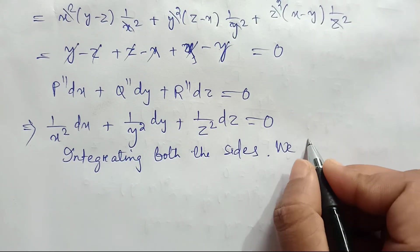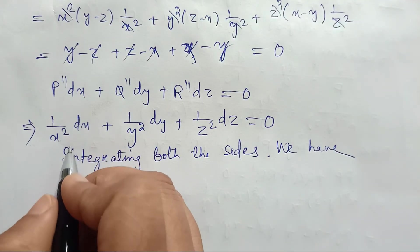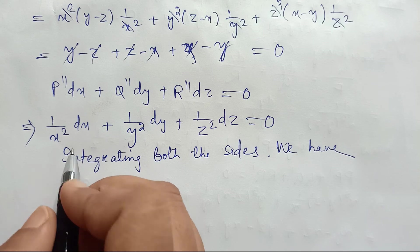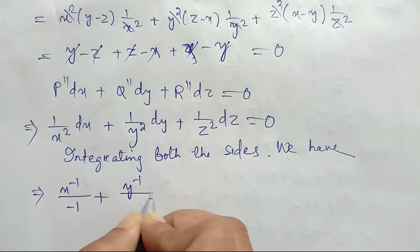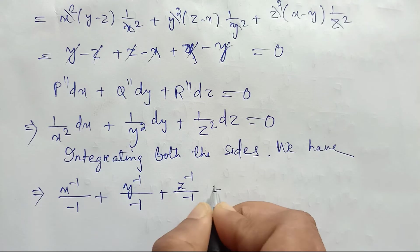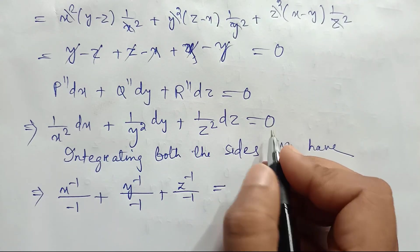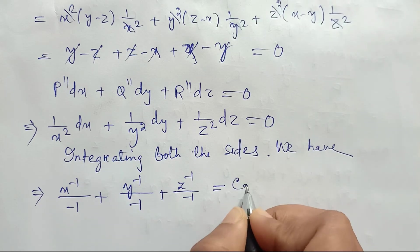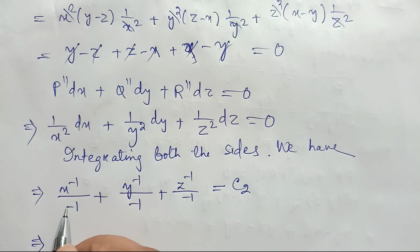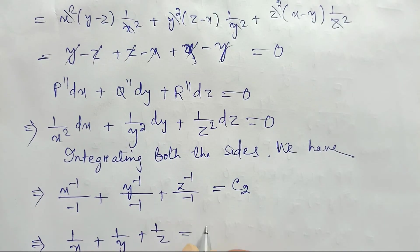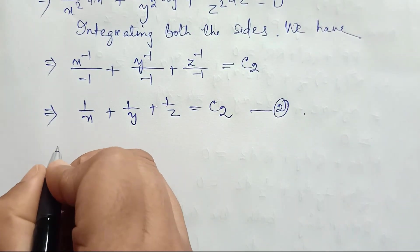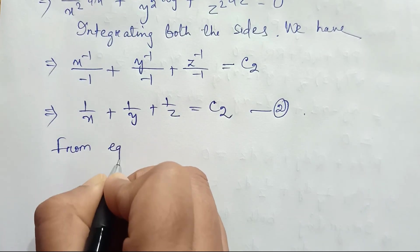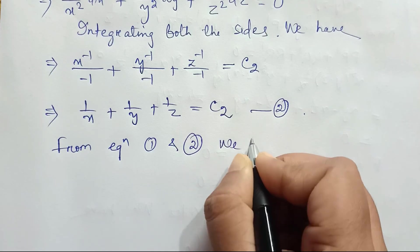Integrating both sides: ∫x⁻² dx + ∫y⁻² dy + ∫z⁻² dz = 0, giving x⁻¹/(-1) + y⁻¹/(-1) + z⁻¹/(-1) = c₂. Taking out the factor of -1, we get 1/x + 1/y + 1/z = c₂. This is equation 2.